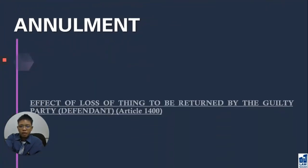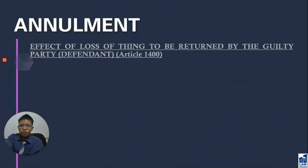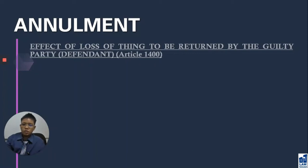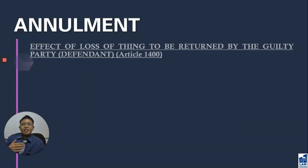In addition to that, annulment and the effect of loss of the thing — Articles 1400, 1401, and 1402. Under Article 1400, if the guilty party is the one whose object is lost — for example, I am a minor with a gold bracelet, and you are a person of legal age with a gold necklace, and we agreed to swap them.